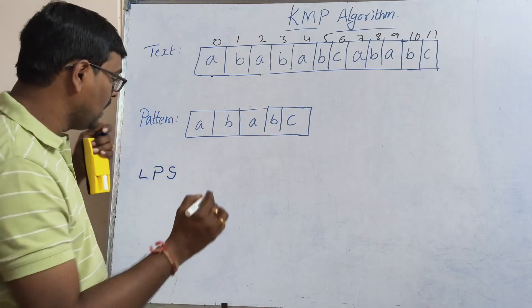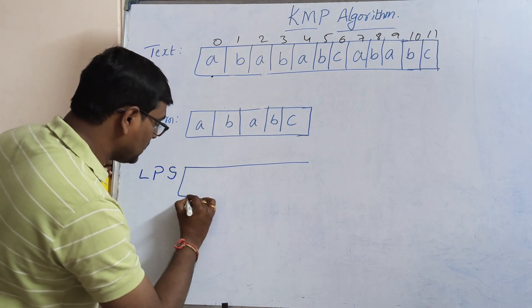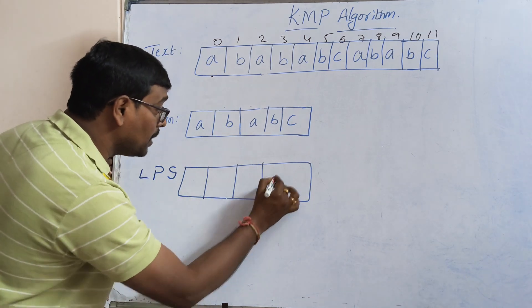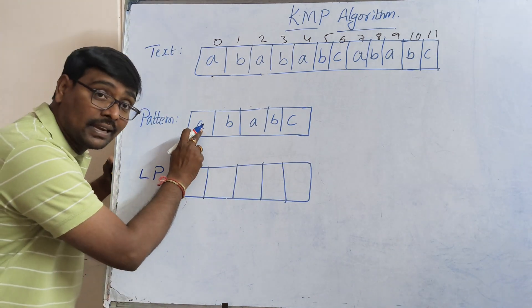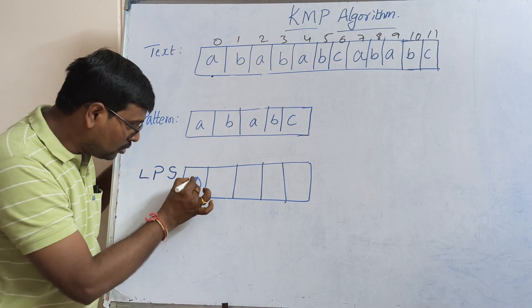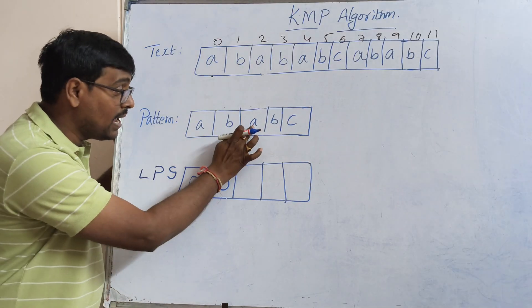Now construct the LPS table. How do we construct it? Simply, the first letter is 'a'. Till now, 'a' is not repeated, so the value is zero. 'b' is not repeated, value is zero.